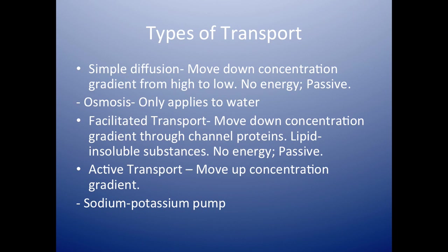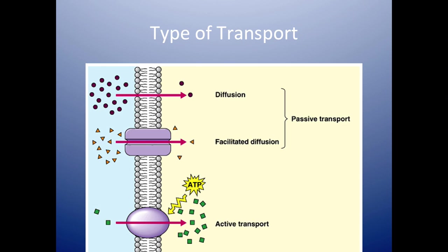Active transport is the opposite of passive transport — there is energy being used and it's movement up a concentration gradient, not down. The most common example of active transport is the sodium-potassium pump. Passive transport has two subtypes: diffusion, which is movement of particles down the concentration gradient without energy, and facilitated diffusion, which is movement through a protein without energy. Active transport is movement up a concentration gradient with energy.